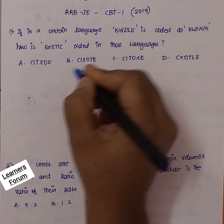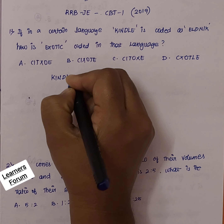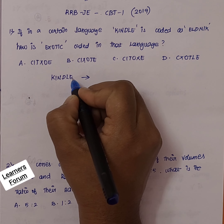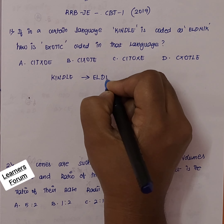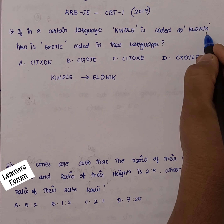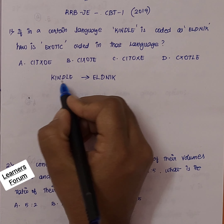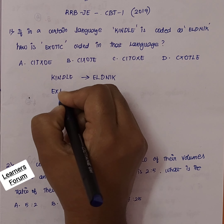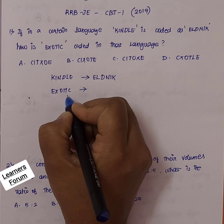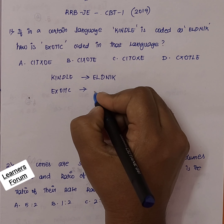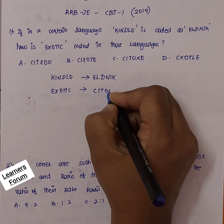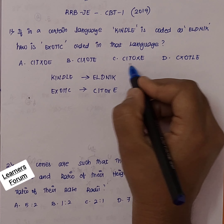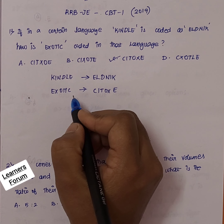If you observe the word KINDLE, it is written in reverse order starting from the last letter. So you can write it as ELDNIK, which is given in our question. This means whatever word is given, we just take the reverse order. In the question, it is asked for EXOTIC. Writing this word in reverse order, we get CITOXE. This answer matches option C, so this is our correct answer.